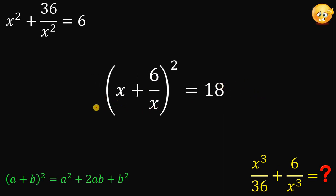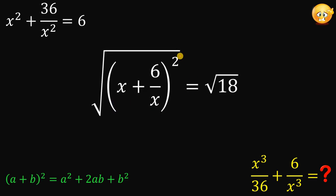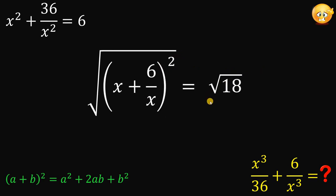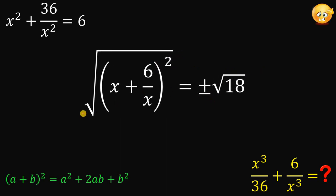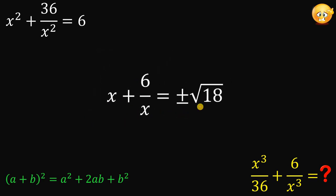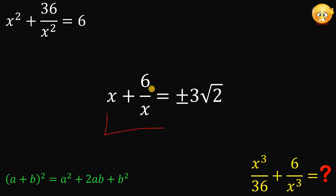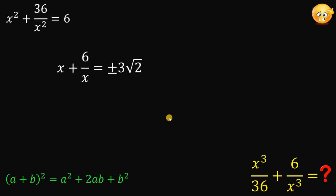To solve for the value of x plus 6 over x, let's take the square root on both sides. Since the power is even, we have two possible values — positive or negative. The left-hand side simplifies to x plus 6 over x. For 18, since 18 equals 9 times 2 and the square root of 9 is 3, the square root of 18 simplifies to 3 times the square root of 2. So x plus 6 over x equals plus or minus 3 root 2.